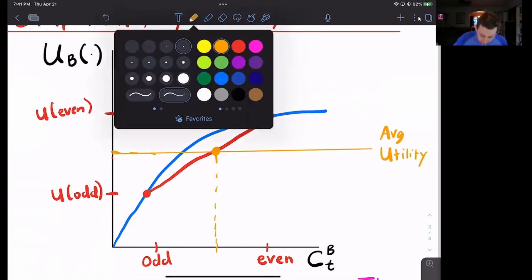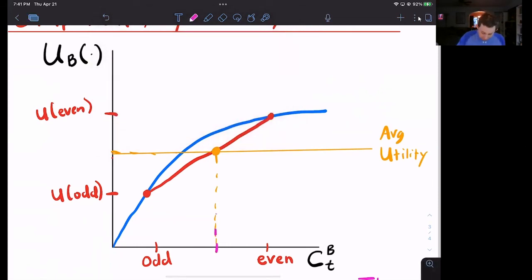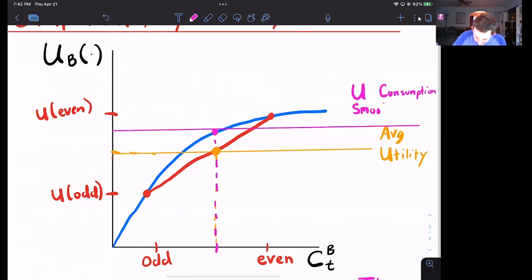But what if he does smooth consumption? Well, if he does smooth consumption, what I'm going to do is I'm still going to take this average consumption, but now I'm going to say, well, what if Bill smooths or perfectly smooths consumption? So he's eating this number of coconuts every day, rather than going back and forth, back and forth, back and forth between low consumption and high consumption. Well, then Bill is going to be on his actual utility function because he's actually consuming that level of coconuts. And he's going to be on this pink line here. Now, this pink line is his average utility if he smooths consumption because he's having the same utility every day. So this is his utility when he consumption smooths.